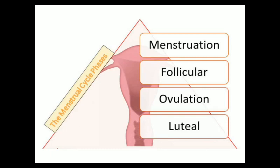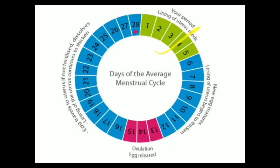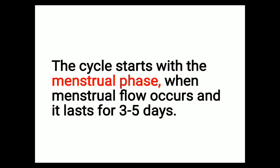The menstrual cycle can be categorized into four different phases: first is the menstrual phase, second is the follicular phase, third is the ovulatory phase in which ovulation takes place, and fourth is the luteal phase. The cycle starts with the menstrual phase, which is the first phase in the reproductive cycle.